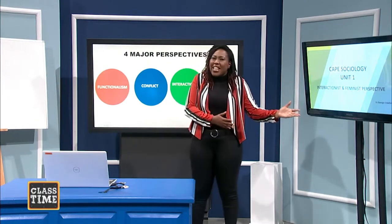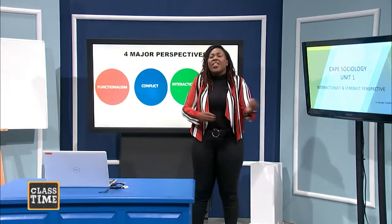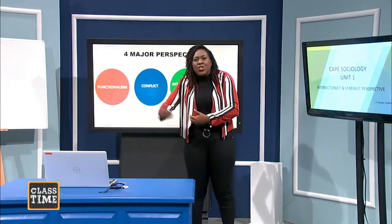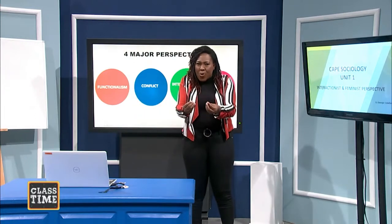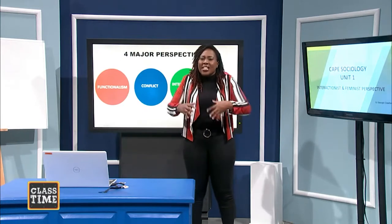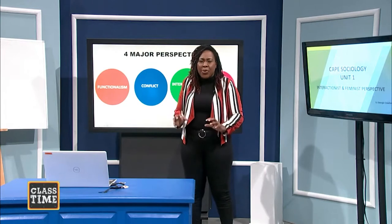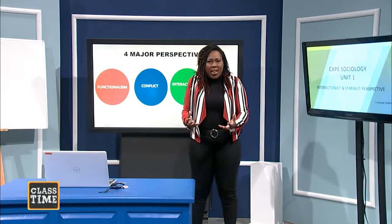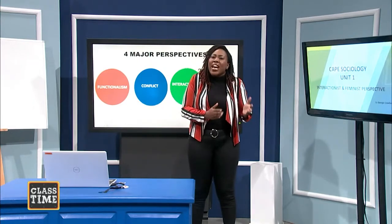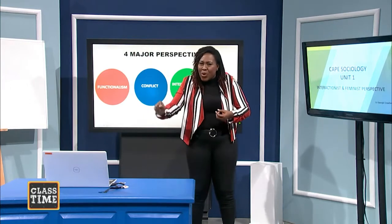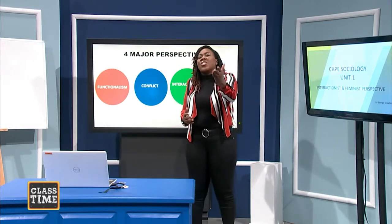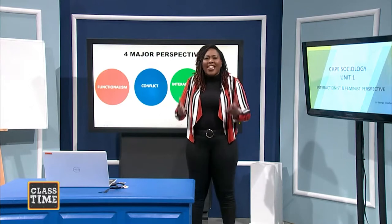For instance, you should know 'value consensus' — once you hear consensus, you should know it's the functionalist. You should know 'false class consciousness' — once you hear that term, you should know it is the Marxist. So you want to remember that when you're reading, when you enter a class, when you're studying, it is not just about the knowledge — the knowledge is very important — but you're also preparing for the exam. Start remembering, drawing on your key terms, write them down, use them in sentences, talk to your friends.